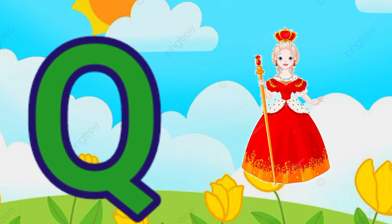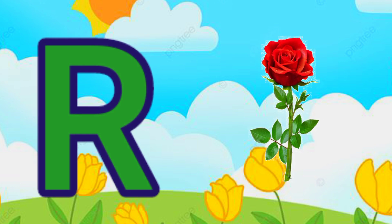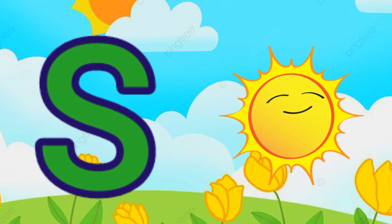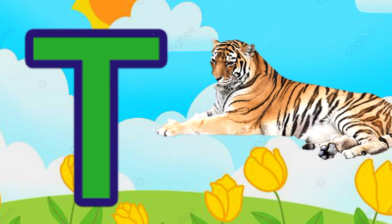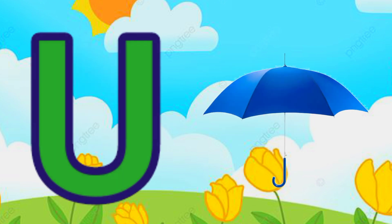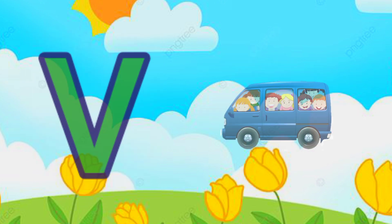Q for queen, R for rose, S for sun, D for tiger, U for umbrella.